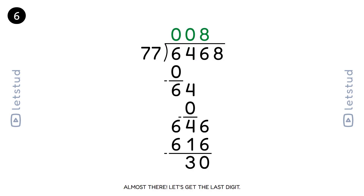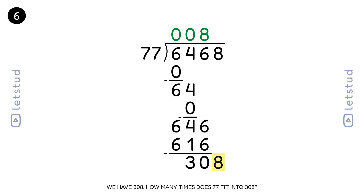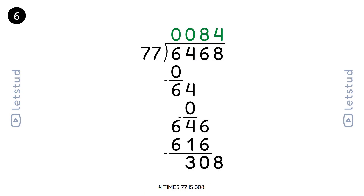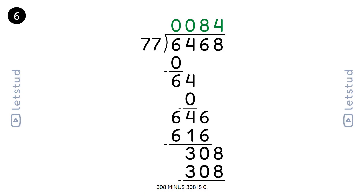Almost there — let's get the last digit. We have a remainder of 32 and bring down the 8 to make 308. 77 fits into 308 four times. 4 times 77 is 308. 308 minus 308 is 0.